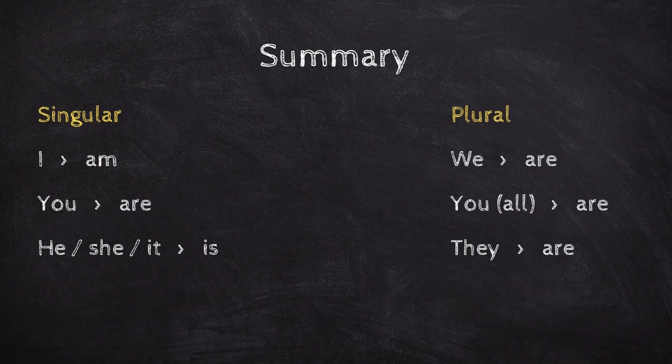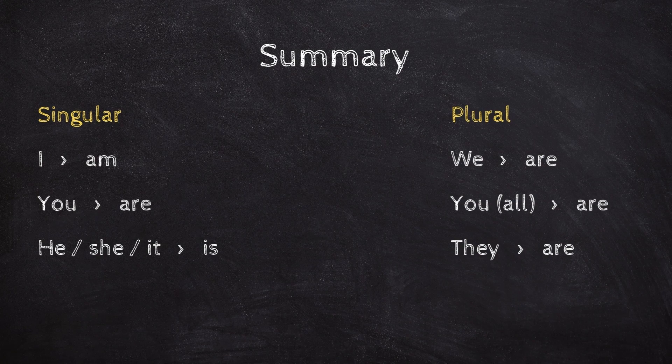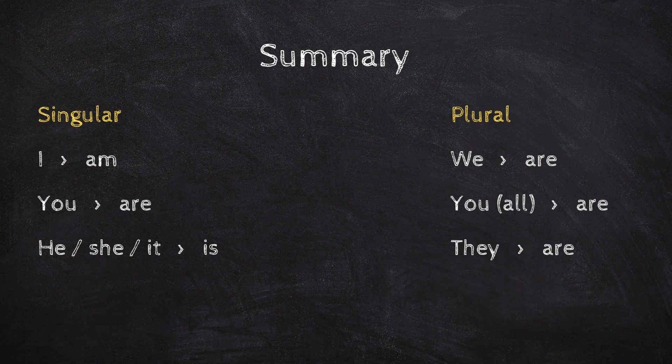Summary: Singular - I am, You are, He/She/It is. Plural - We are, You are, They are.